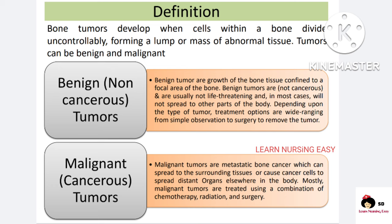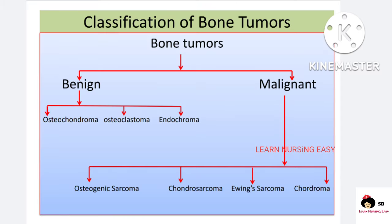Bone tumors are classified as benign and malignant. Benign is the non-cancerous type of tumor — it is not life-threatening and it is present in a focal part, meaning one specified area of the bone, and it is not spreading to other parts of the body. Treatment depends on the size and type of tumor. Malignant tumors are cancerous, they are life-threatening, and they can metastasize to surrounding tissues and distant organs. These tumors can be treated with a combination of chemotherapy, radiation therapy, and surgery.